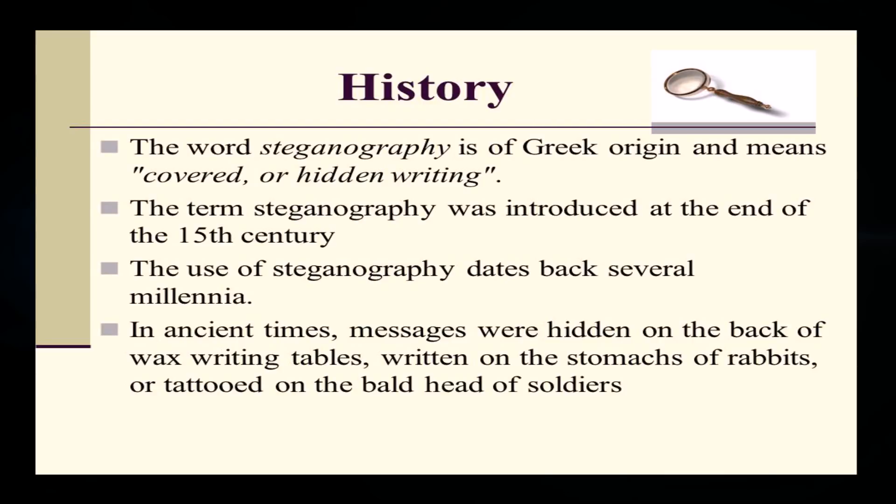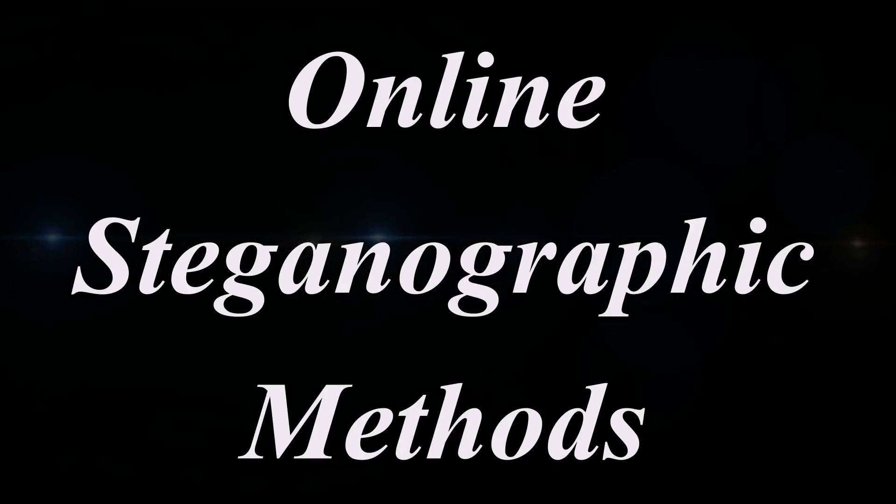Majorly, the text is made hidden behind the pixels of an image, or maybe in the backend of a video. If you want to perform steganography, there are various methods available. The simplest method to hide text behind an image is online steganography.